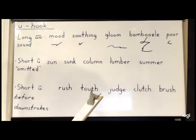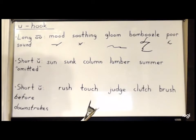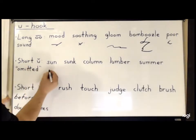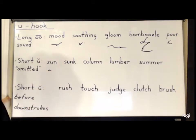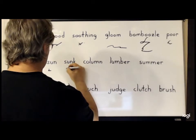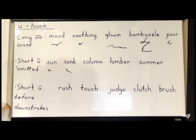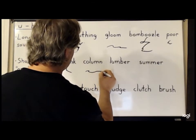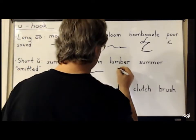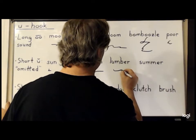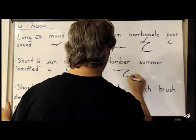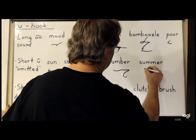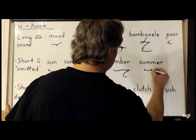In the body of a word, the short U and the OW sound are omitted before M and N, and the short U before downstrokes. So in the word 'sun', we'll omit the U and just write S and N. For 'sunk', we'll write S and the N-K stroke. For 'column', we'll write K-O-L and then M, with the U omitted. For 'lumber', it will be L, omit the U, then M, B, R. For 'summer', it will be S, M, and reverse E for the sound at the end.